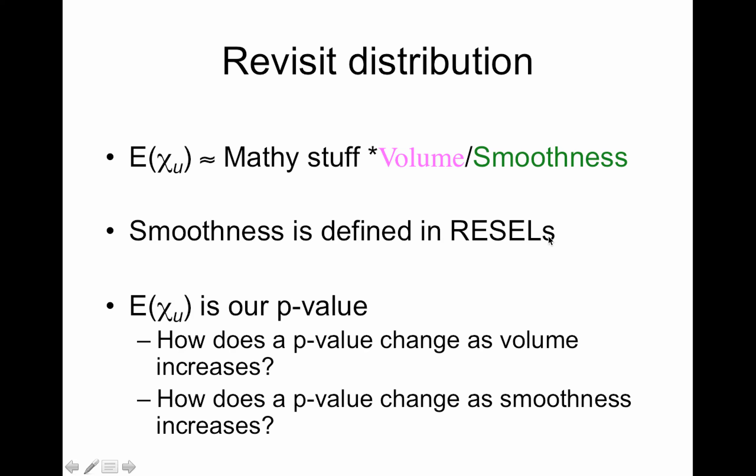On the other hand, if the data are not very smooth, our multiple comparison problem will be worse. So this number will be smaller, less smooth. So our p-value will be bigger because we're dividing by a smaller number.